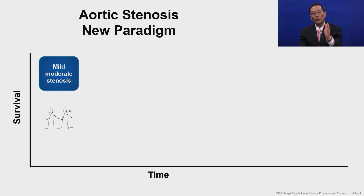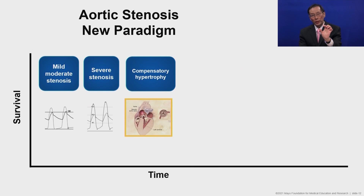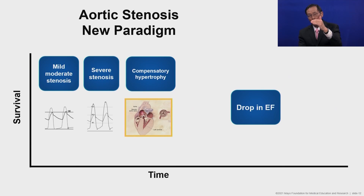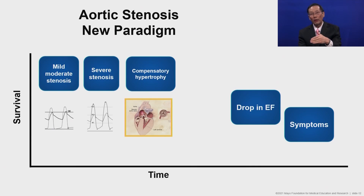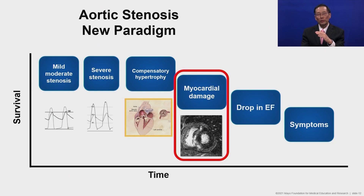The new paradigm looks at the stages of aortic stenosis. There will be a time of mild to moderate stenosis lasting years or decades. At some point, the stenosis becomes severe, creating pressure overload on the ventricle and compensatory hypertrophy. It used to be that we would wait for the drop in ejection fraction or the onset of symptoms — but there was a part that was missing: before either of those, there was actually the development of myocardial damage.